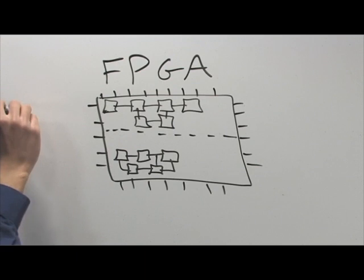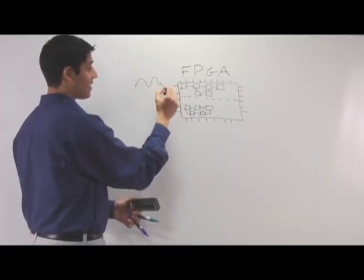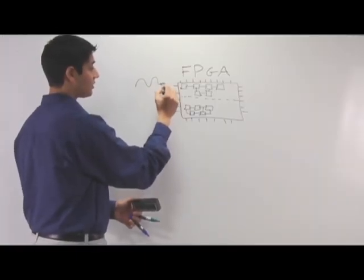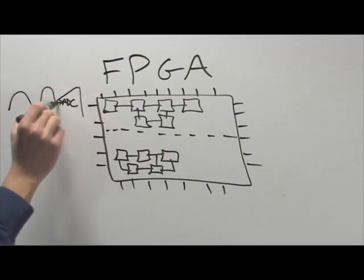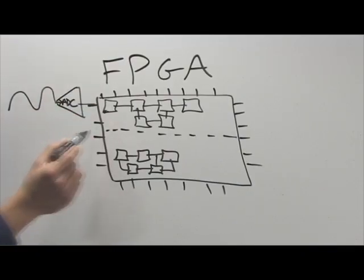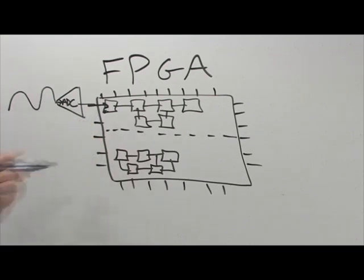I can drive this top circuit with an analog signal. So imagine I have some analog signal. Well, I can run that to an analog to digital converter. And I can drive that analog signal directly into the chip and perhaps I want to do some kind of signal processing, maybe some filtering.